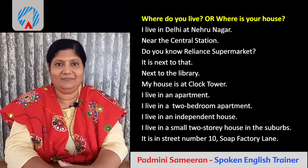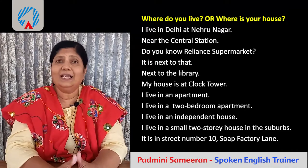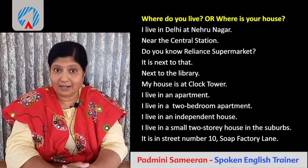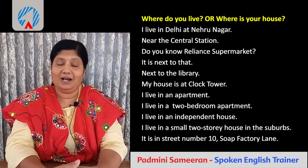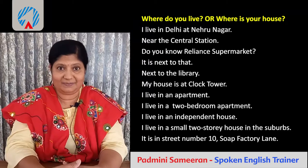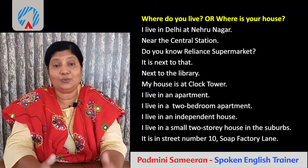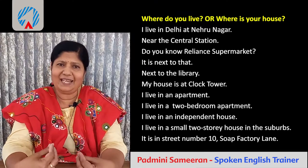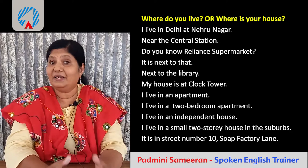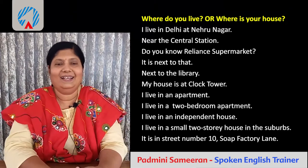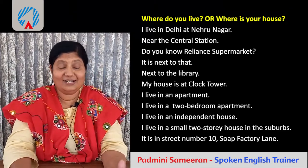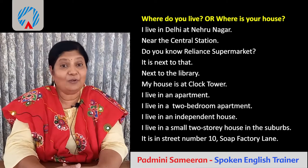You can also describe the type of home you live in. You can say 'I live in an apartment,' 'I live in an independent house,' 'I live in a two-bedroom house,' 'I live in a two-bedroom apartment,' or 'I live in a small two-story house in the suburbs.' If you want to give the exact address, you can say 'I live in street number 10, Soap Factory Lane.' You can give your exact street number or the name of the lane.